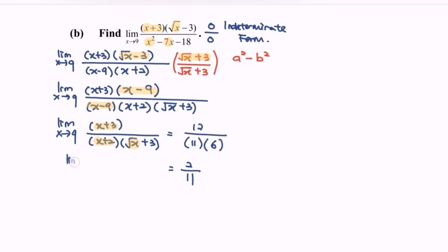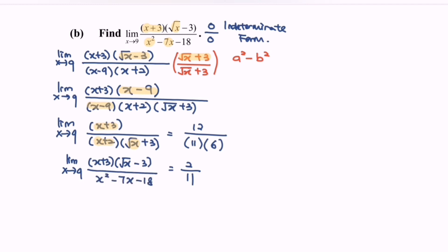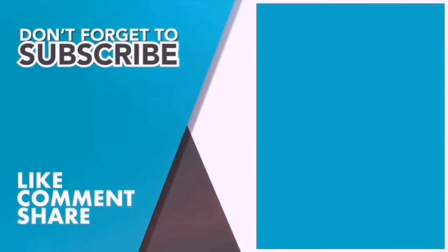Limits when x approaching 9 for the function (x plus 3) multiplied with square root of x minus 3, over x squared minus 7x minus 18 — the value will be approaching 2 over 11. Thank you so much for watching this video. If you think the video is useful, kindly consider to like, comment, share and subscribe.